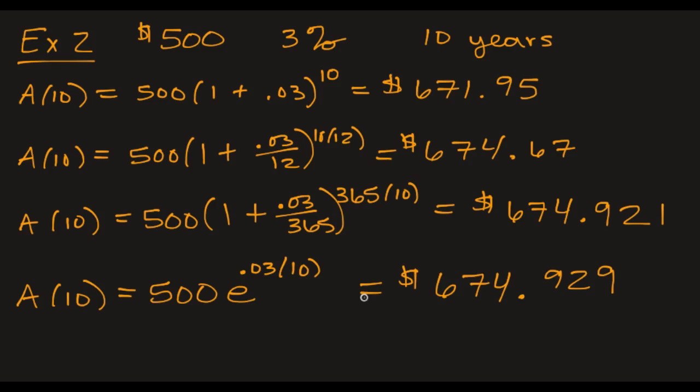And then compounded continuously. I actually took this out to three decimal places so that we could see that it is increased slightly, but the bank would round down anyway. So in fact, whoever's paying you the money would round down anyway, so they're actually going to be the same amount for 10 years.